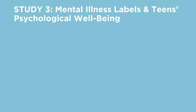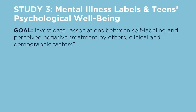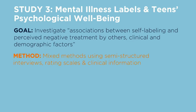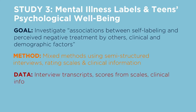Our last example is about self-labeling among adolescents with mental disorders, or the impact of mental illness labels on teens' psychological well-being. The goal was to investigate associations between self-labeling and perceived negative treatment by other clinical and demographic factors. The researchers hypothesized that many teens wouldn't self-label, and those that did would have worse psychological well-being. They combined methods: semi-structured interviews with open-ended questions, rating scales like the Rosenberg Self-Esteem Scale, and clinical information about each patient, like their type of disorder and age of first treatment.